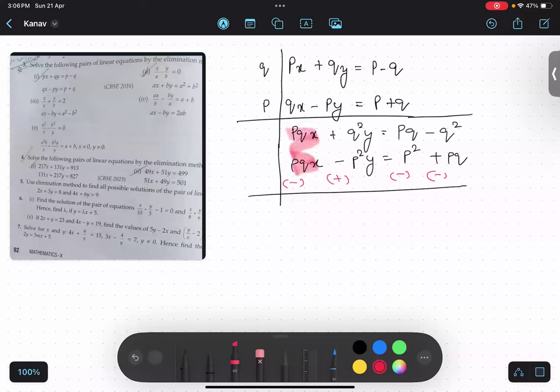This thing will become negative. Yes or no? Yes. So this thing will be cancelled. q square plus p square y is remaining. Understood?